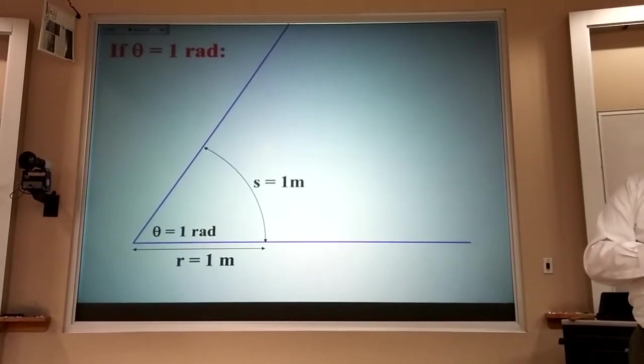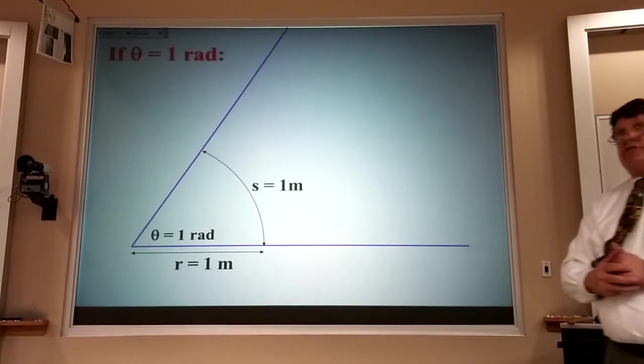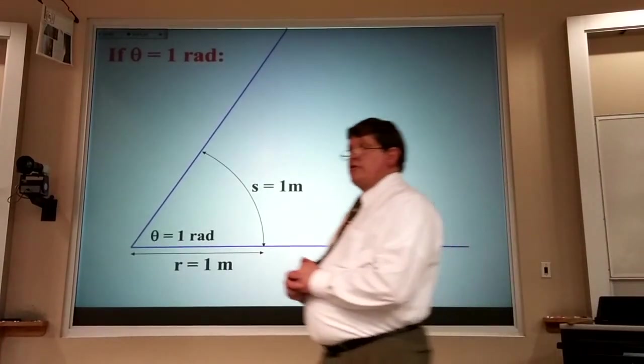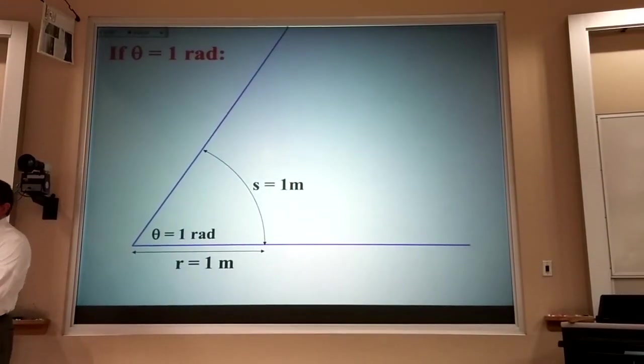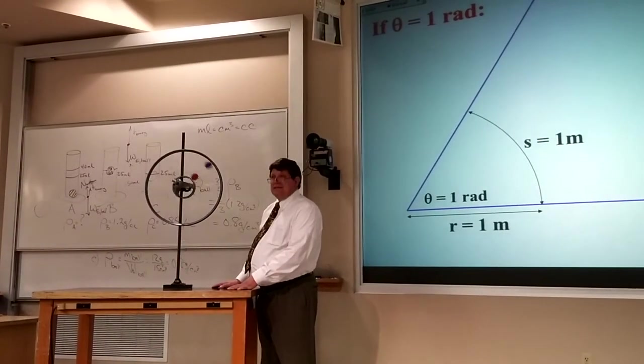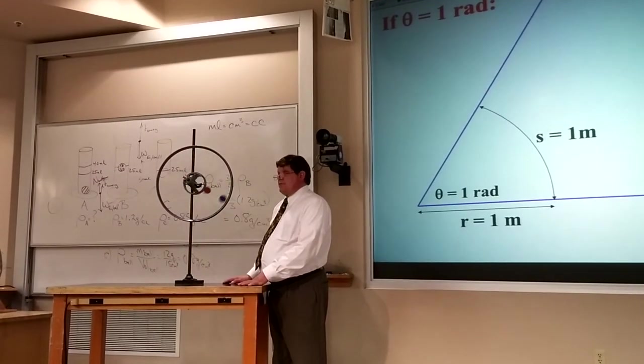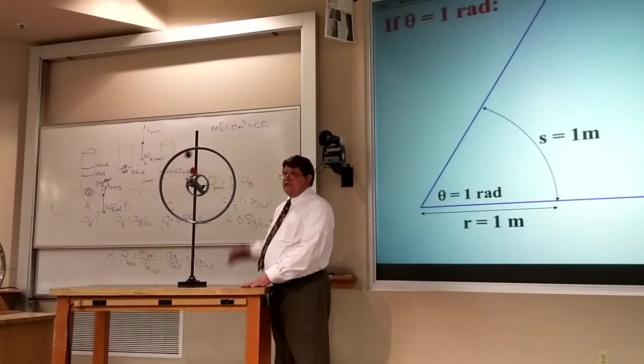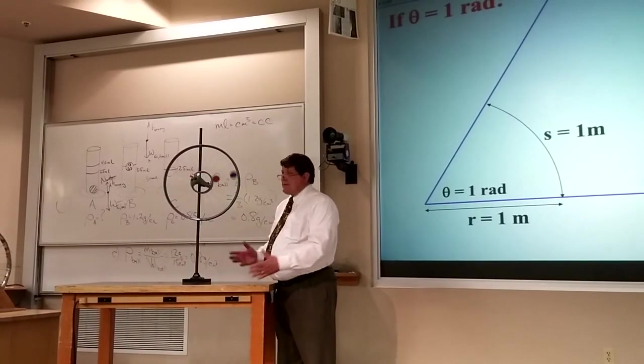Now, another way of thinking of that is that there are 2π radians in every once around, once around a circle. So that means 2π radians, six and change, has to fit in 360 degrees. Well, that means each radian is going to have to be a little bit less than a sixth of the degrees, or a little bit less than 60. Does that make sense?